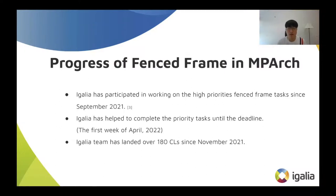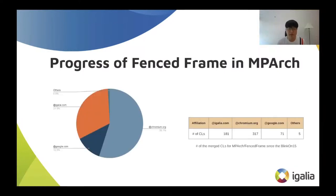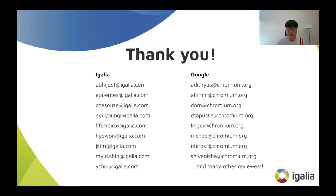Igalia has landed over 180 CRs since last November. These charts show the number of commits related to MPH and fenced frame during the last 6 months. As you can see, Igalia has landed 181 CRs regarding the fenced frame task, taking possession of about 31% of the total commits. We appreciate all participants who have worked on the fenced frame task in MPH during this period. Especially, we really appreciate the reviewers who reviewed a large number of our CRs with passion and deep knowledge.